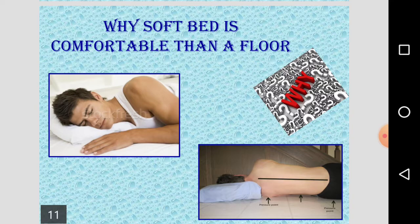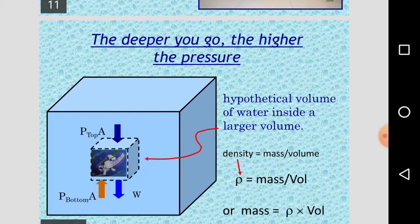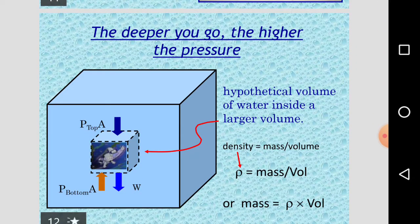Second case, the area of contact is less and for the same force applied, pressure is more and it's very easier for skating. You should also find out the reason why soft bed is comfortable than a floor. Here in the first case area of contact is more and uniform pressure, less pressure compared to next one where the point of contact and area of contact is less, and stress is more which results in pain.